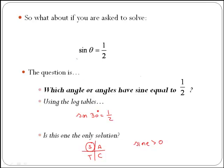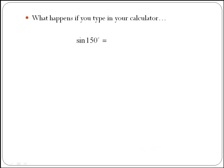Which means this equation here, which is in fact called a trigonometric equation because your unknown is an angle, will have a solution also in the second quadrant. What happens if you type in your calculator sine of 150? If you type in your calculator sine of 150, you will get a half.